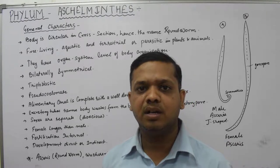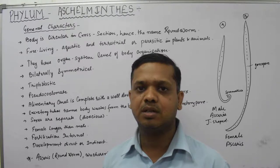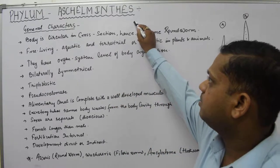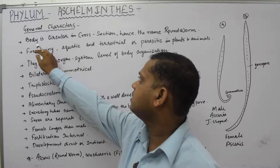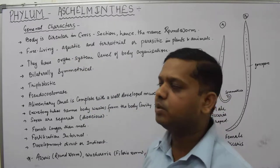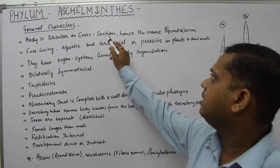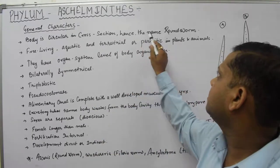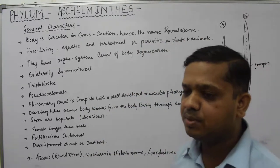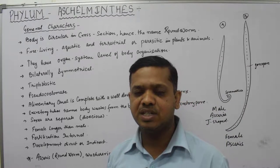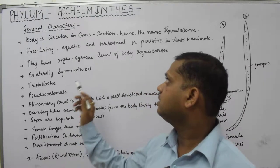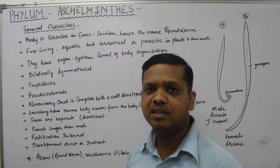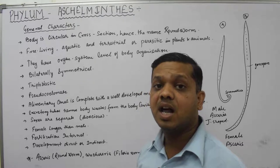Now we will understand one by one all the important characteristic features of phylum Aschelminthes. The first characteristic feature is that the body is circular. In cross-section, when we cut the transverse section, we can see the circular body — hence the name roundworm. They are basically roundworms, and that is why we call this particular phylum the roundworms.